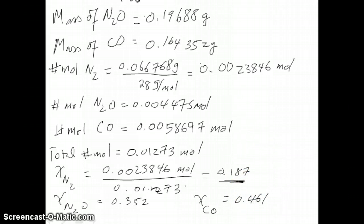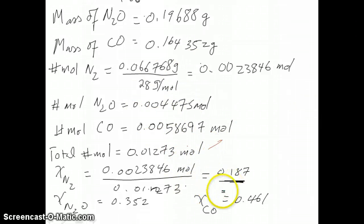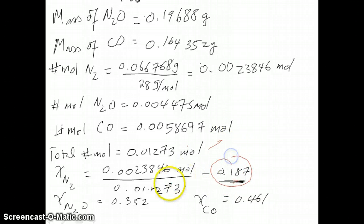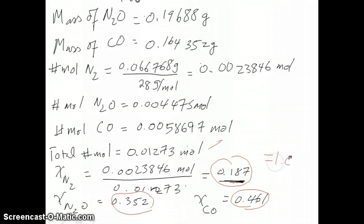I want to highlight the following: as mentioned in the previous video, if you add up all the mole fraction numbers together they should sum to 1, because everything should add up to 100%. And that's exactly what you see here — 0.187 plus 0.352 plus 0.461 equals 1.0. That should always be true for any mole fraction calculation.